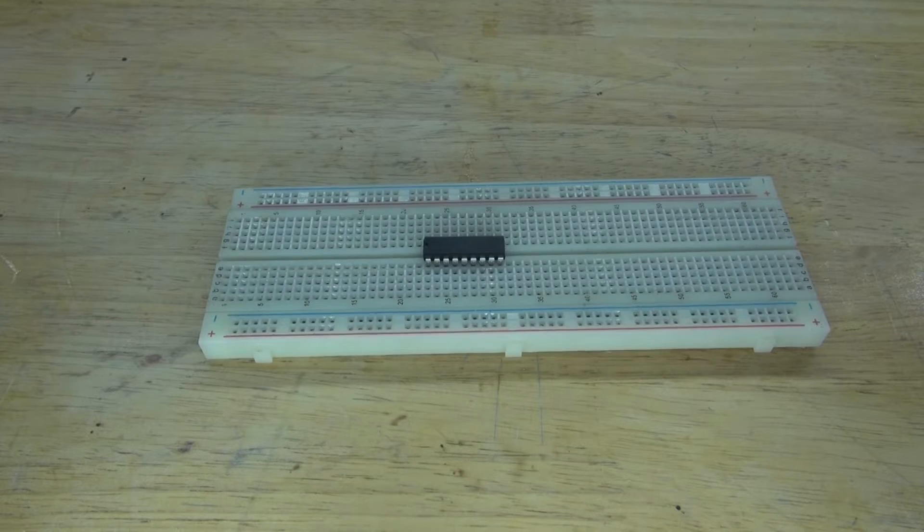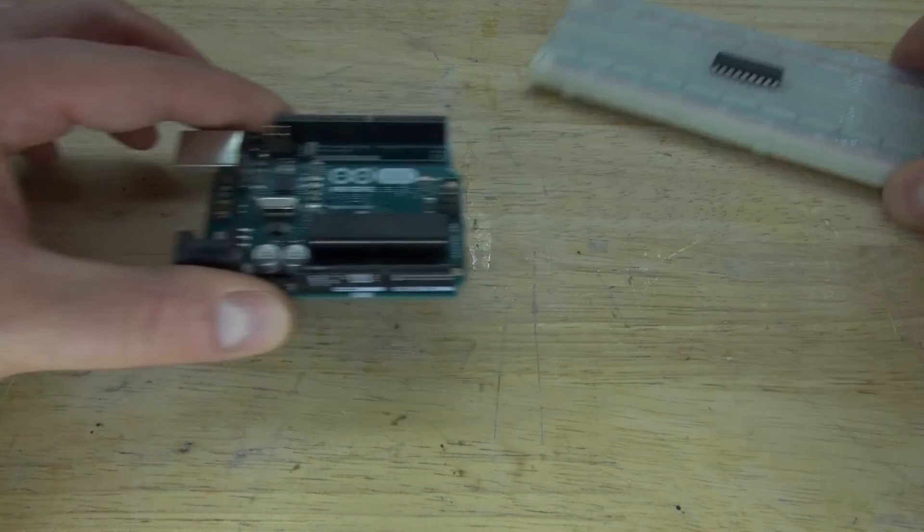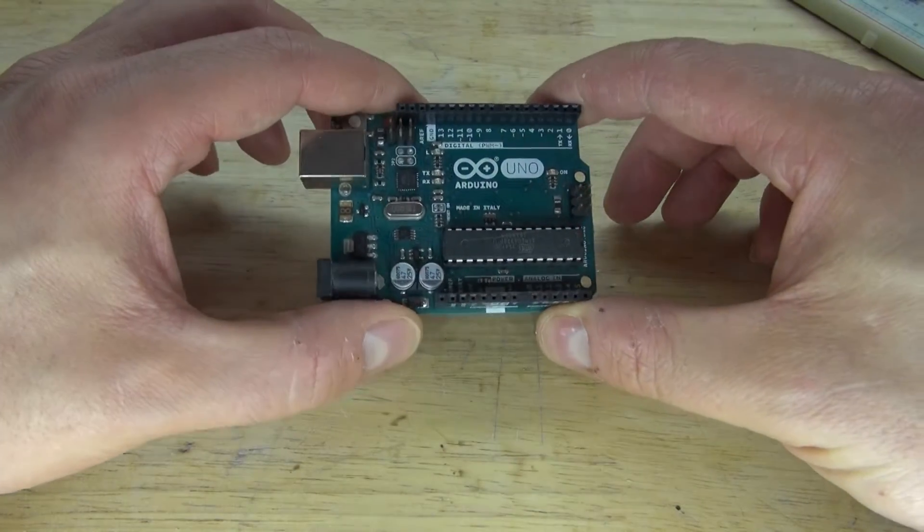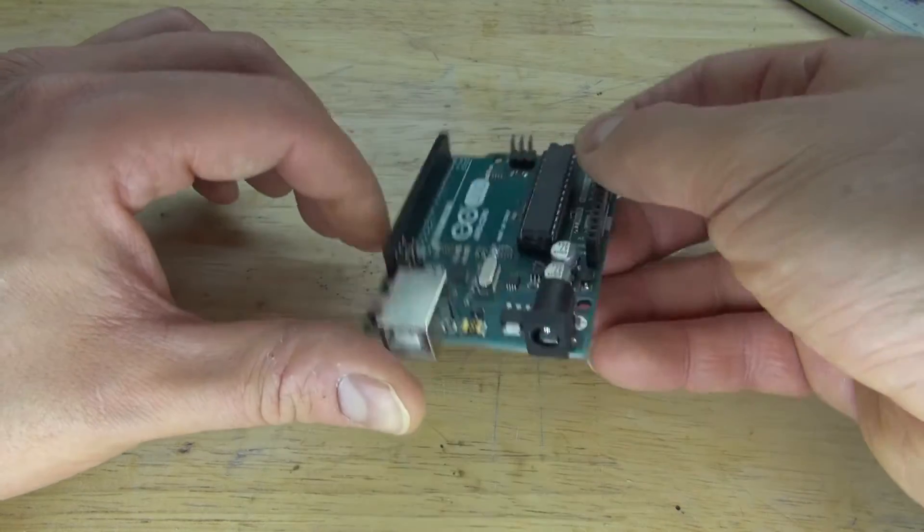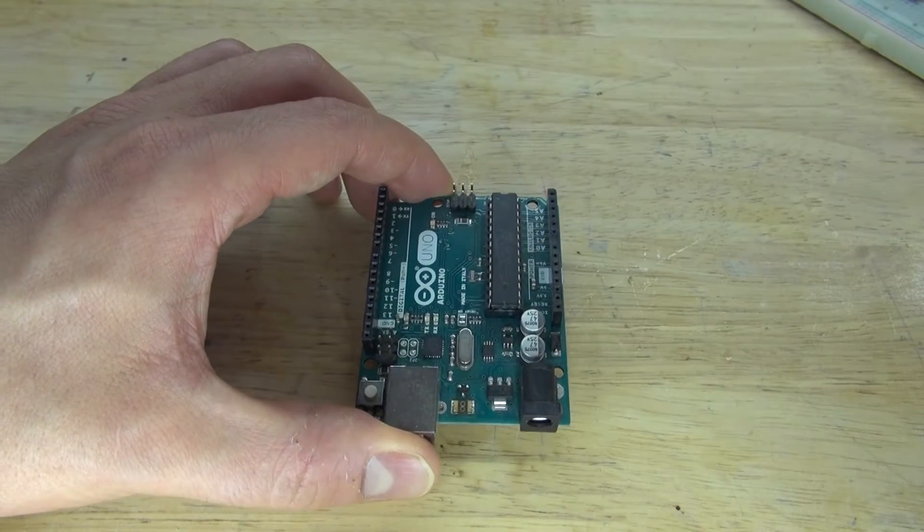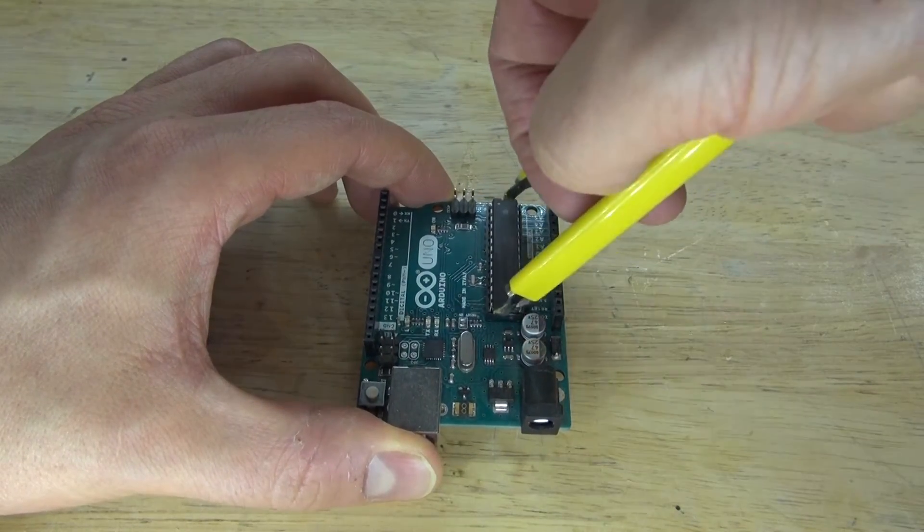Removing ICs from breadboards are a little bit too easy. What if I wanted to do something more difficult, like say an Arduino Uno? This right here is an ATmega328 microcontroller, and I want to try removing it, because what if I wanted to replace it with another programmed one, or what if this one's damaged?